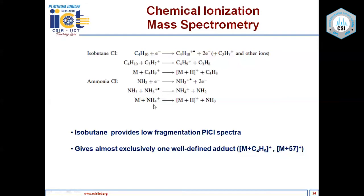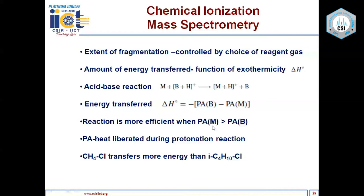As compared to methane CI, isobutane CI provides lower fragmentation and you get [M+C₄H₉]⁺ or [M+57]⁺ ions. CI spectra are very simple with much less fragmentation because it is a soft ionization technique — ionization takes place by ion-molecule reactions rather than electron bombardment. Some fragmentation does occur, and the extent is controlled by the choice of reagent gas and the proton affinity of the sample molecules.